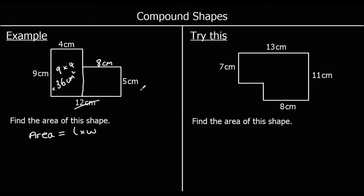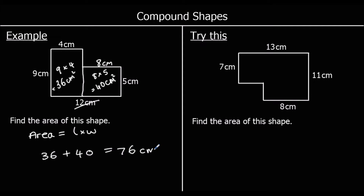For our second rectangle, it has a length of eight and a width of five. The area is length times width, so eight times five, which is 40 centimetres squared. Now we know both parts separately; to find the total area of the whole shape, we add them up. The total area is 36 plus 40, which is 76 centimetres squared.